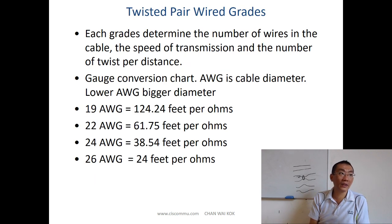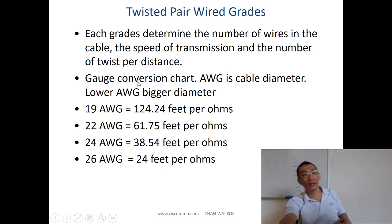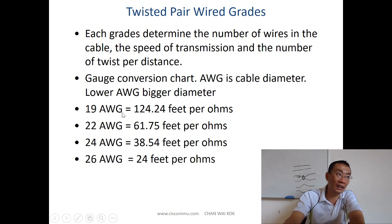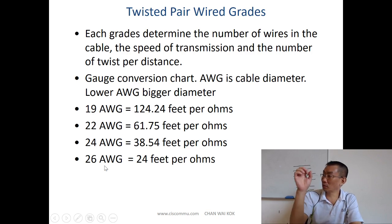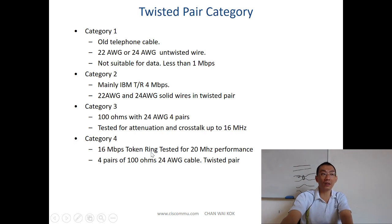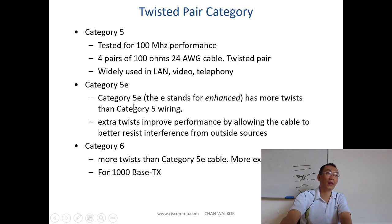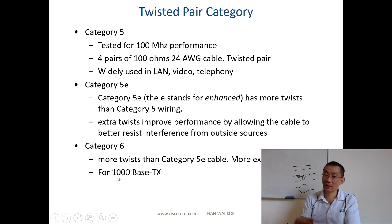Wire grade is determined by American Wire Gauge (AWG). The smaller the AWG number, the bigger the diameter — so a 19 AWG wire is thicker than a 24 AWG wire. Cable categories include: Cat1 for old telephone wire, Cat2 for IBM Token Ring, Cat3 for Ethernet at 10 Mbps, Cat4 for 16 MHz Token Ring, Cat5 for Fast Ethernet, Cat5e also for Fast Ethernet, and Cat6 for Gigabit Ethernet, which is more expensive.